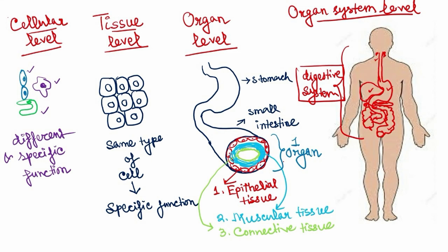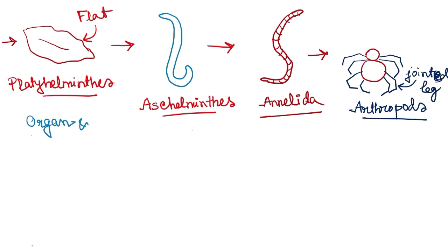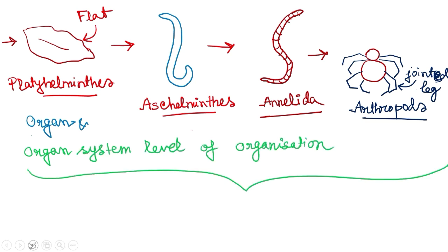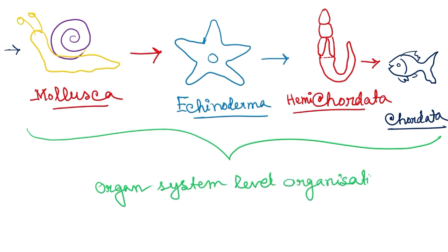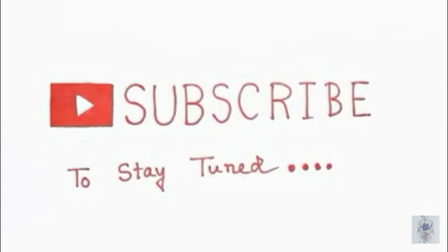This organ system level of organization is a very developed level and is found in Platyhelminthes, Aschelminthes, Annelida, Arthropoda, Mollusca, Echinodermata, Hemichordata, and Chordata — essentially all phyla from Platyhelminthes to Chordates. In the next video, we will talk about germ layers and the coelom.